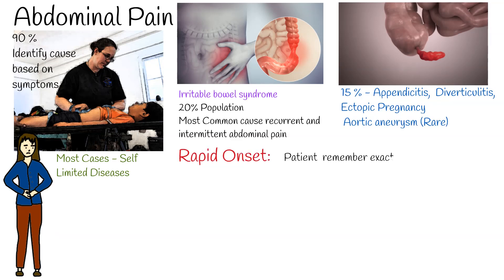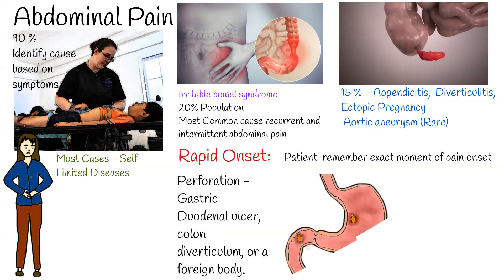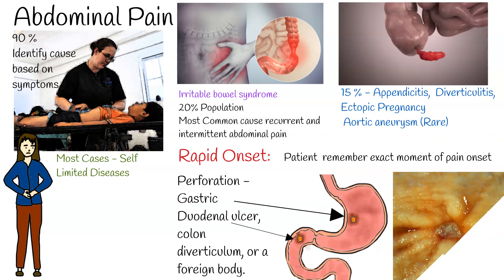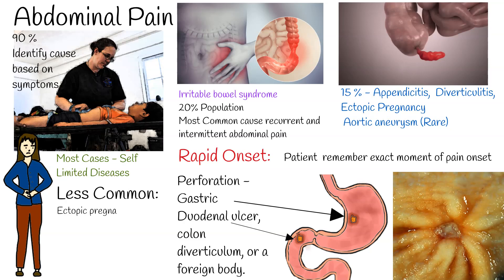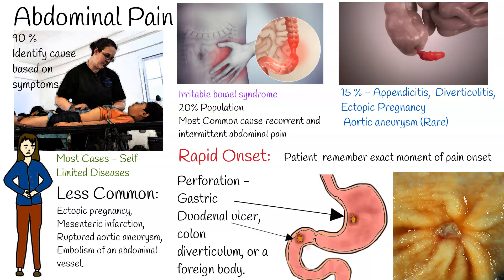If abdominal pain onset is very rapid and sudden, the patient can even describe what activity was happening when the pain began. Such sudden pain is associated with perforation of a gastric or duodenal ulcer, colon diverticulum, or a foreign body. Less common causes of such sudden pain can be ectopic pregnancy, mesenteric infarction, ruptured aortic aneurysm, or an embolism of an abdominal vessel.